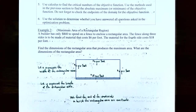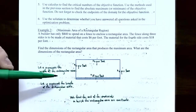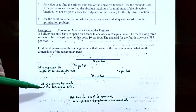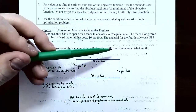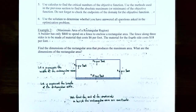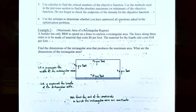Let x represent the width and y represent the length of the rectangular area. We want to maximize the area. The constants $6 per foot and $18 per foot do not need variables. Three sides use $6/ft material and the fourth side uses $18/ft material.